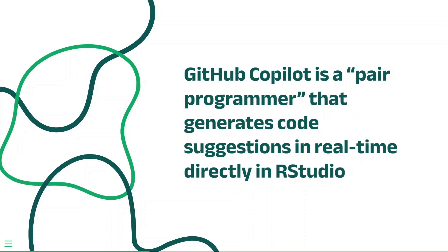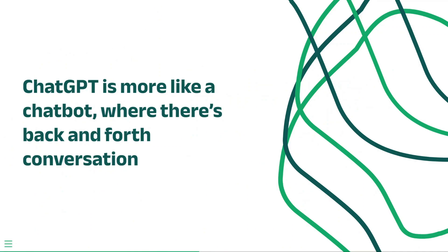GitHub Copilot is a pair programmer that will generate code suggestions in real time directly within your IDE. This will make your R programming so much faster and more efficient. On the other hand, ChatGPT is more like a chatbot where there's a back and forth conversation.